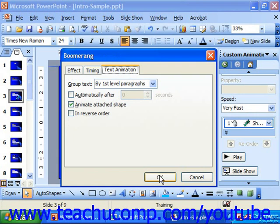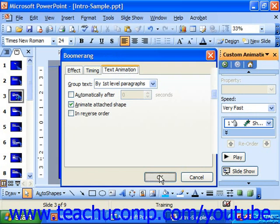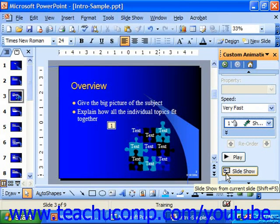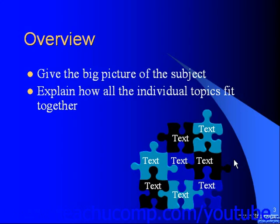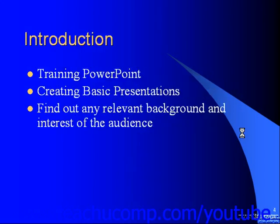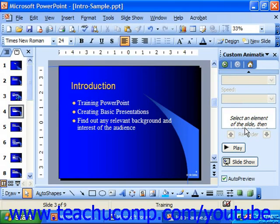Once you have your animation order set, click OK. At the very bottom of the task pane, you can see a Play button that you can click to play the animation sequence in its entirety. You can also click the Slideshow button to preview the animation as it would play in the slideshow. If you wanted to turn off the animation preview feature, in the custom animation task pane you could uncheck Auto Preview — however, normally that is checked.